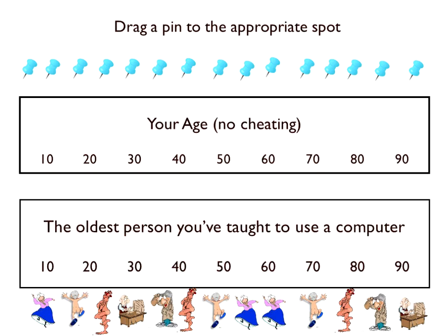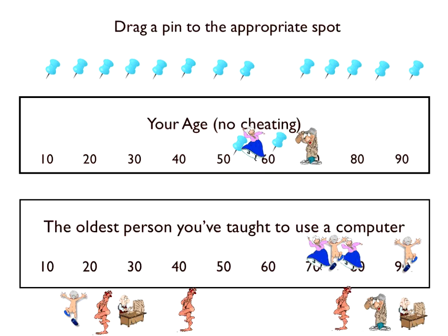I'd like you to drag a pin to roughly where your age is, and another pin to the oldest person that you've taught to use a computer. You can grab one of those animations from the bottom and just drag them along that slider. We've got somebody who's taught a 90-year-old, and most of the people in this room are in the 50 to 60 bracket. Sadly, I'm getting close to the 70 bracket.